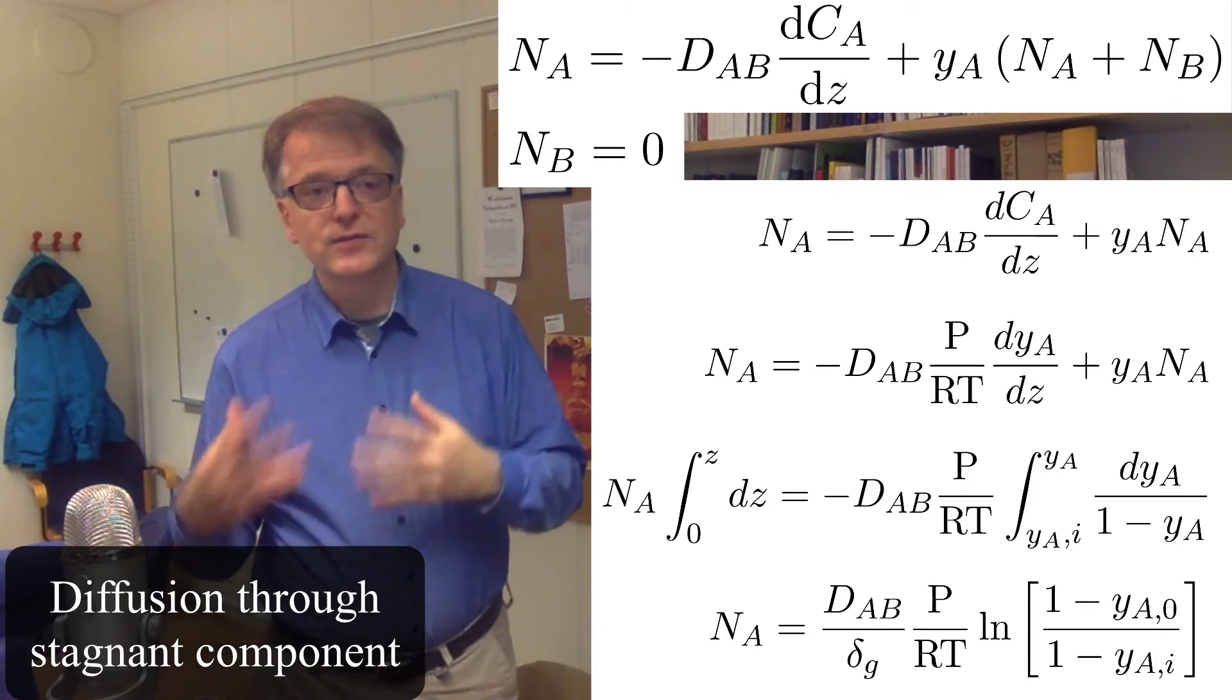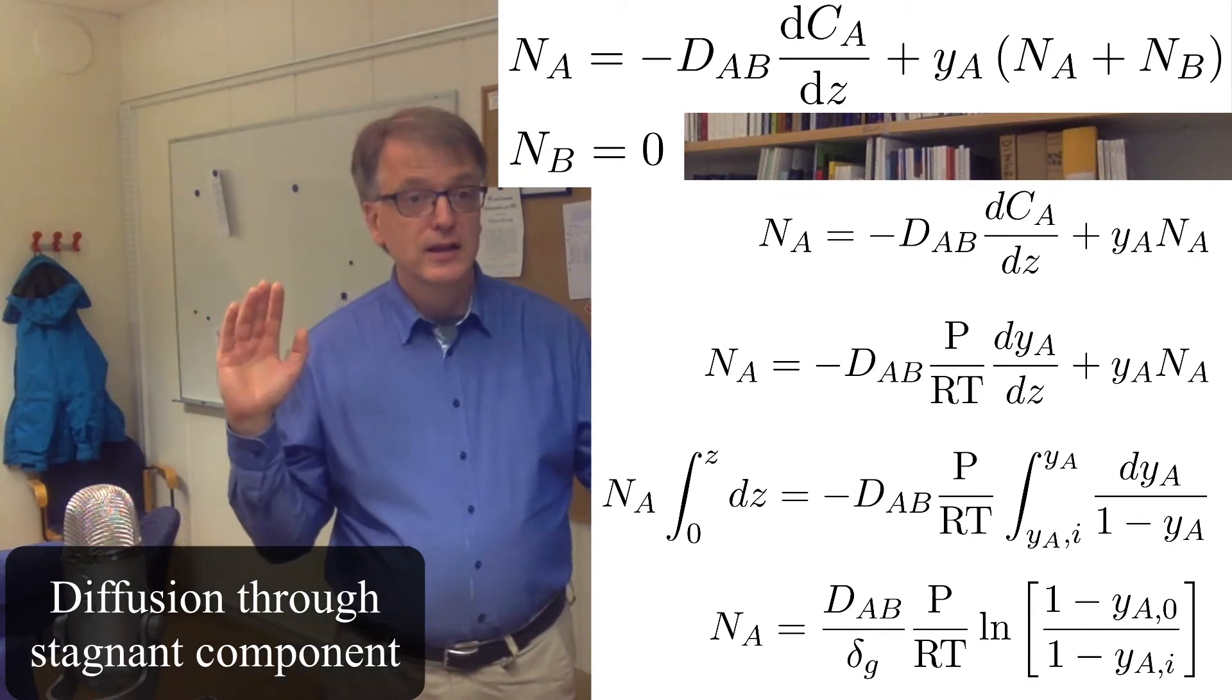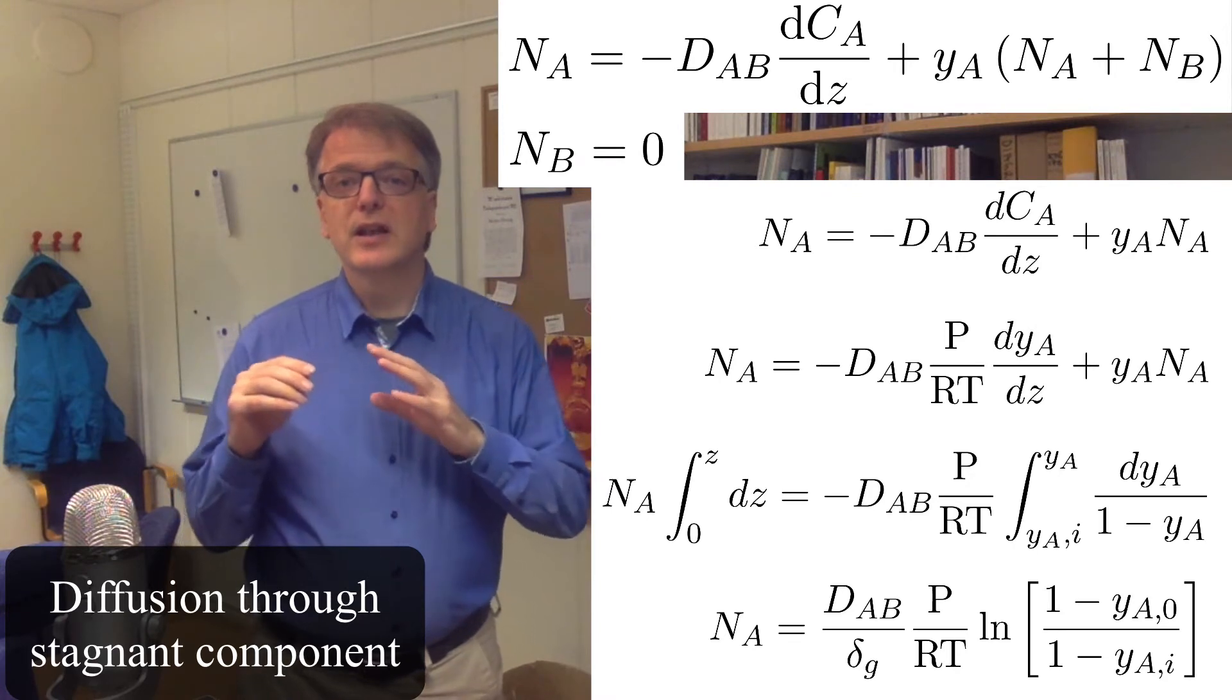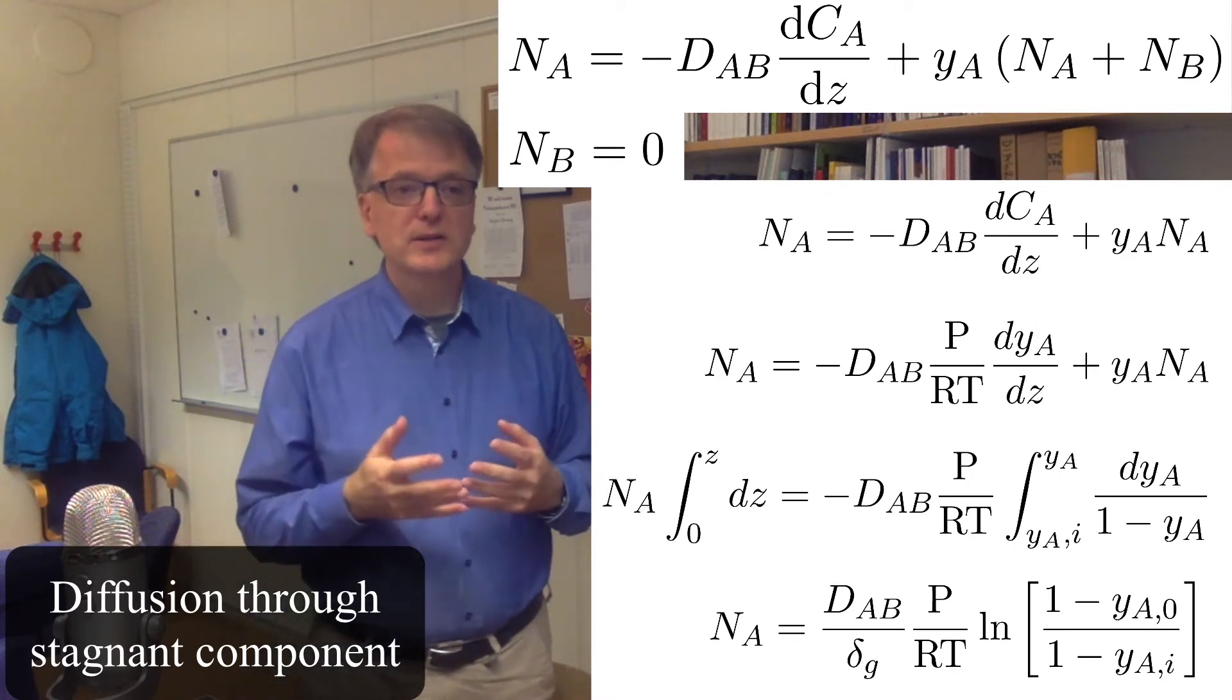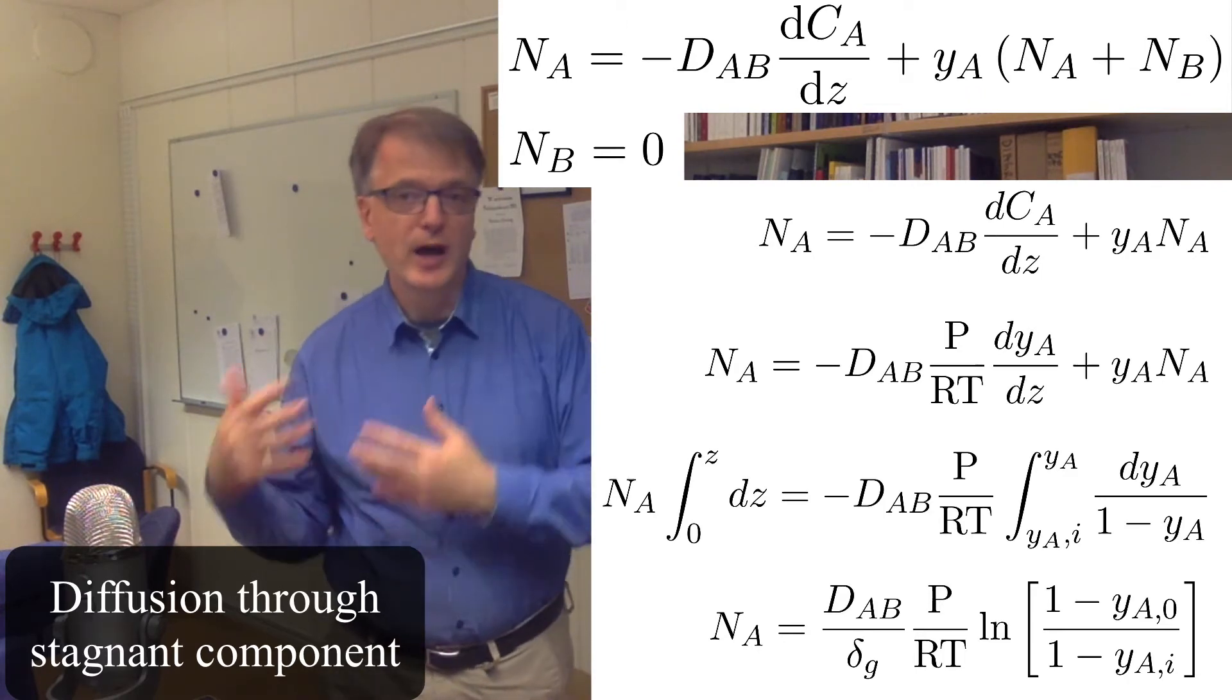Na equals the diffusivity divided by delta times P divided by RT times the natural logarithm of 1 minus one of the molar fractions divided by 1 minus the other molar fraction.